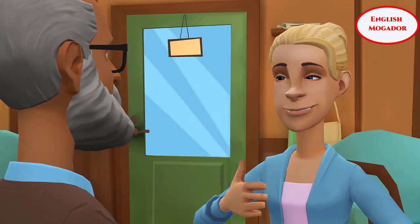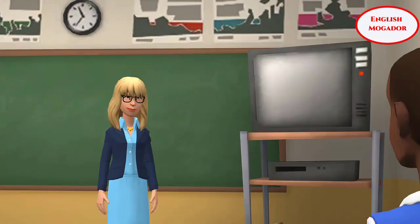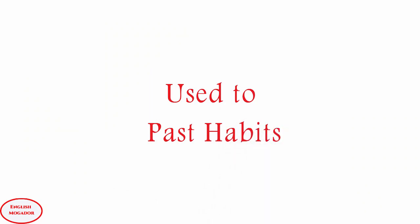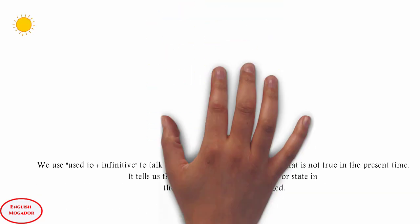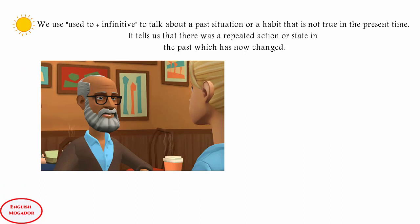Happy to know all that grandpa. I hope you have now developed an idea about how to talk about past habits. Now let's watch the lesson for more details. Used to — past habits. We use the form 'used to' plus infinitive to talk about a past situation or a habit that is not true in the present time, meaning it tells us that there was a repeated action or state in the past which has now changed. To illustrate, let's consider some examples from the animation.